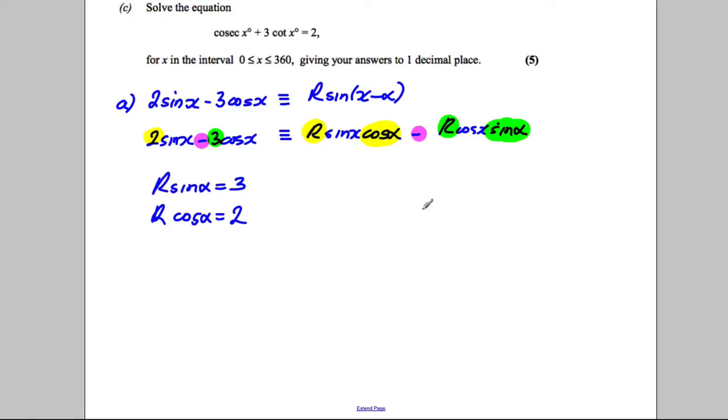And from that we can write our r. So our r is going to be the square root of 2 squared plus 3 squared, which is 4 add 9 which is 13. So r is going to be the square root of 13. Also we can state dividing these equations, we can state that tan alpha, this divided by this, is 3 over 2. So alpha is going to be inverse tan of 3 over 2.